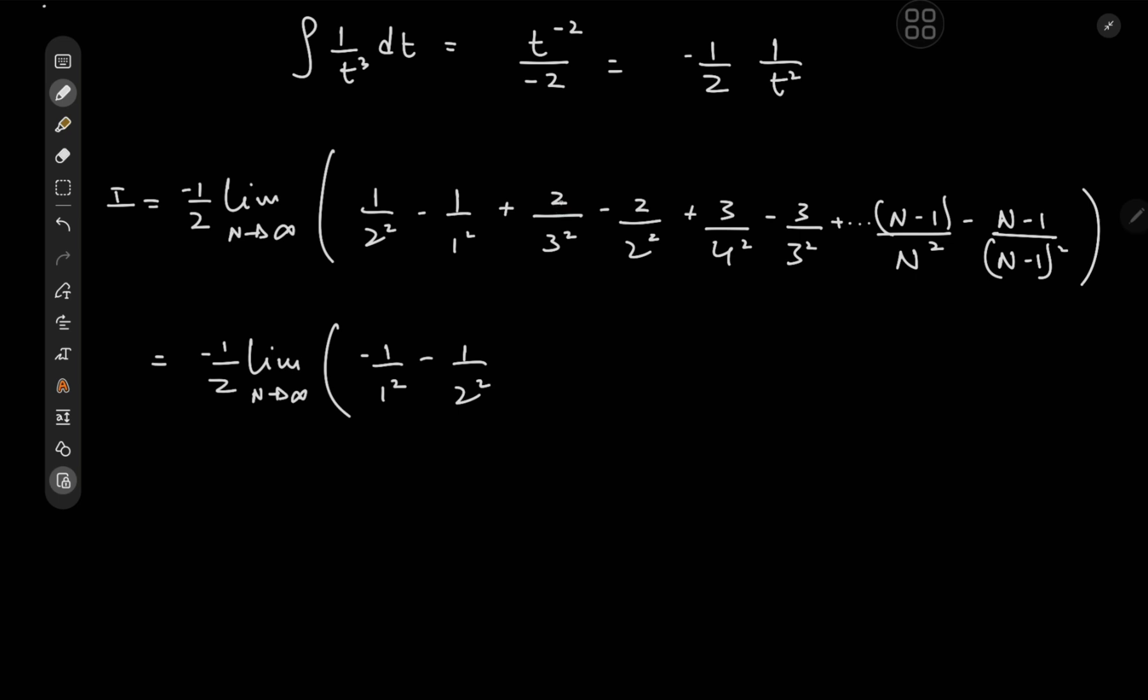And similar, by similar token, we have 2 over 2 squared and minus 3 over 3 squared. So again, we would have negative 1 over 3 squared. And we can see that this is a recurring pattern all the way up to, let's see here. We have n over n squared minus 1 over n squared.